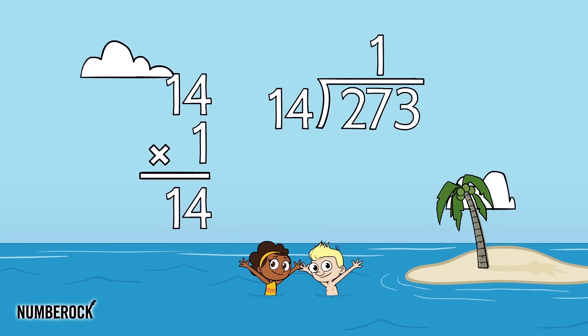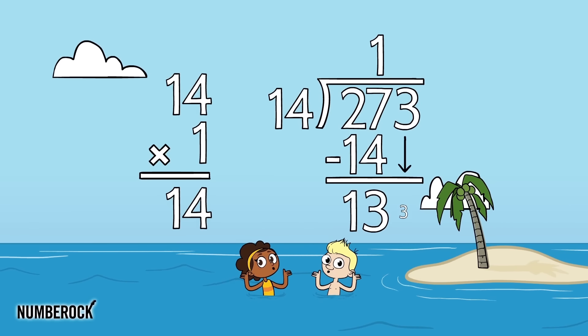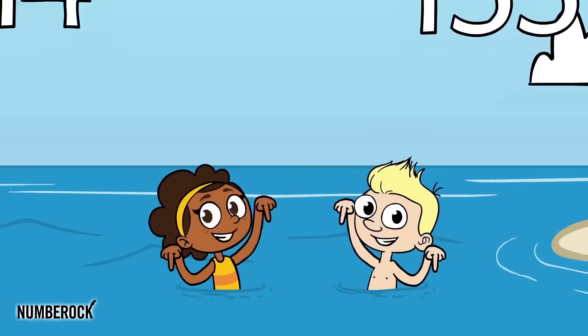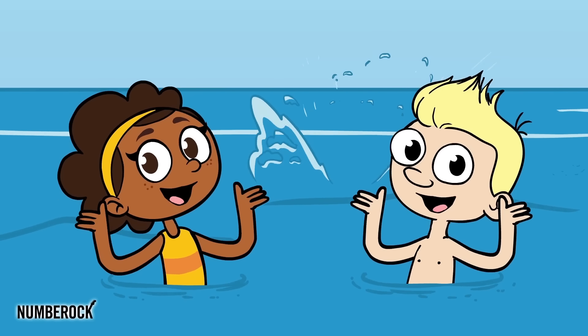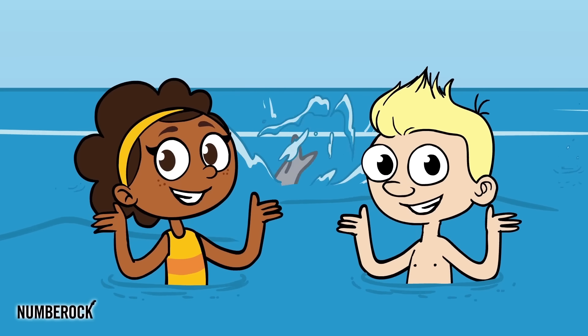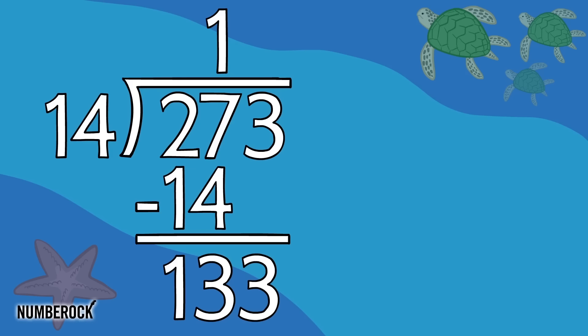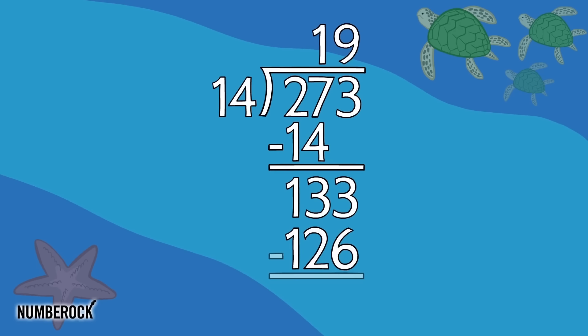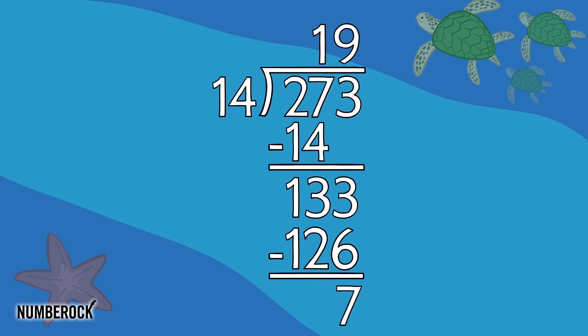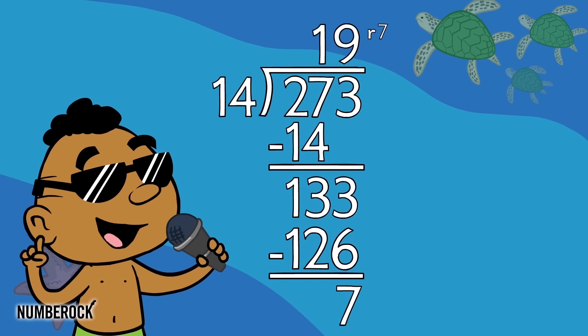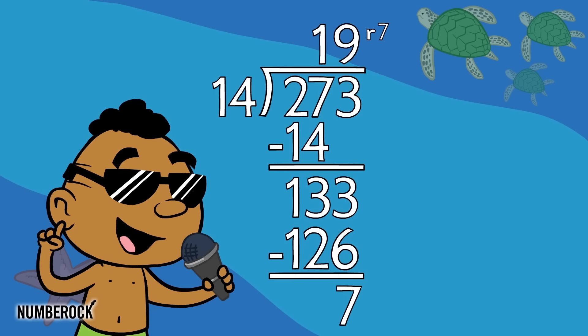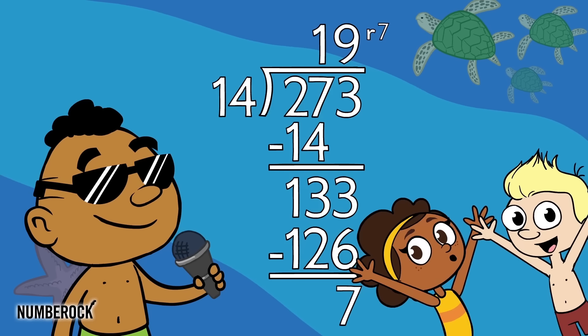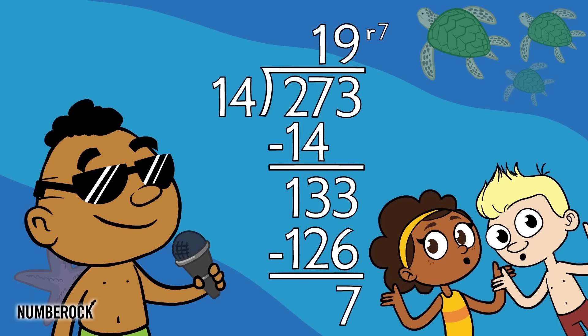Divide, multiply, subtract, bring down. That's how a quotient is found. And when there's a remainder, write R followed by what's left over. That's how a quotient is found.